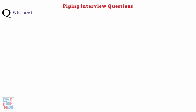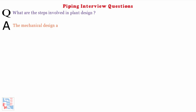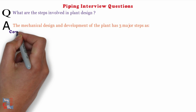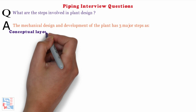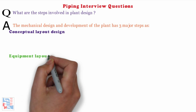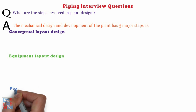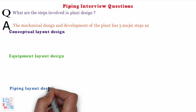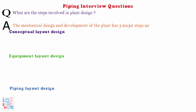What are the steps involved in plant design? The mechanical design and development of the plant has three major steps: Conceptual Layout Design, Equipment Layout Design, and Piping Layout Design.